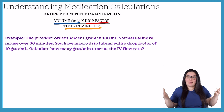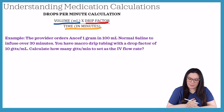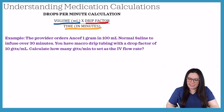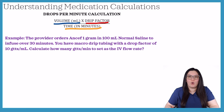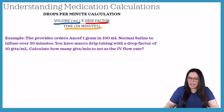For the next example, we're using the same calculation. The provider orders Ancef one gram in 100 mL normal saline to infuse over 30 minutes. You have a macrodrip tubing with a drop factor of 10. Calculate how many drops per minute to set as the IV flow rate.